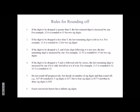So first rule is, if the digit to be dropped is greater than 5, the last written digit is increased by 1. So for example, 12.6 is rounded to 13 for 2 significant figures. So if somebody says, hey, this is the number, rounded to 2 digits, so then 6 is more than 5, and this is the one you're dropping, so it becomes 13.